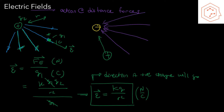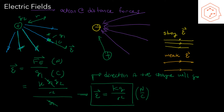For a negative charge, the field lines are all going to be inwards. By convention, we define a strong field with close vector lines and a weak field with farther apart lines. You can see in our diagram that the farther the distance away from our charge — a large r — the farther apart the field lines are, indicating a weak field. The closer we are to the charge, the closer together the lines are, indicating a strong field.